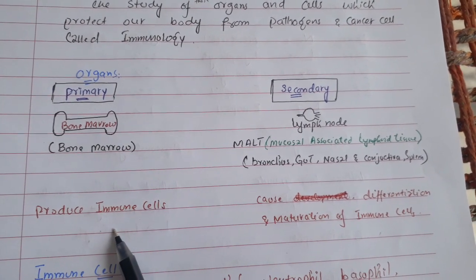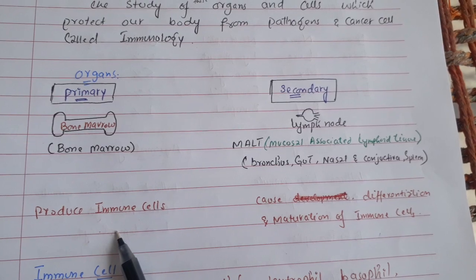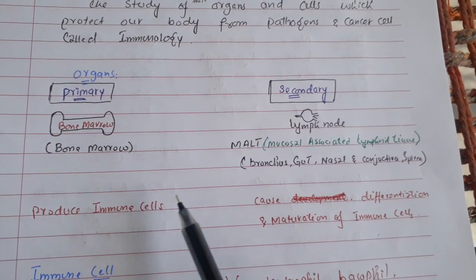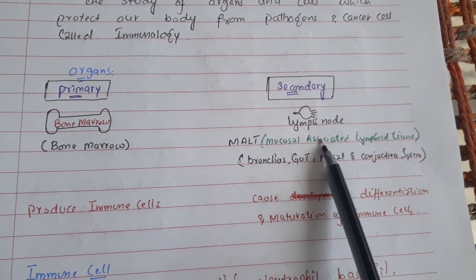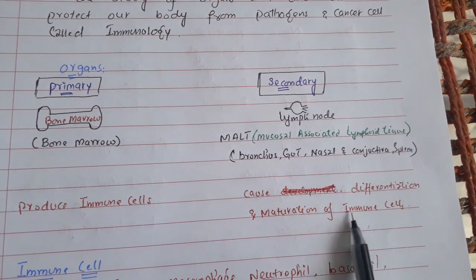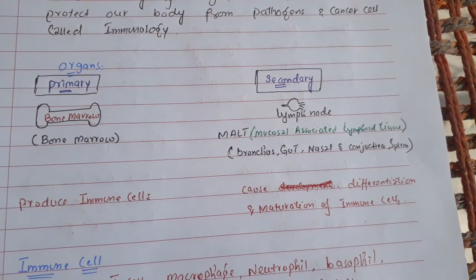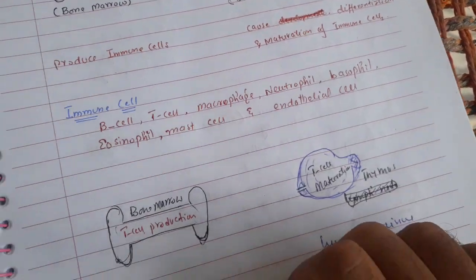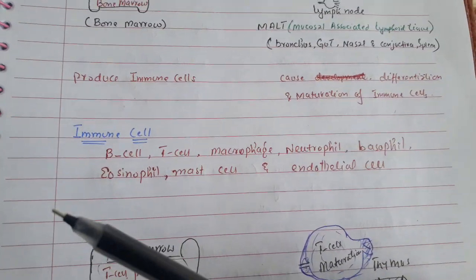The production of immune cells occurs in the primary organ, that is the bone marrow, and the secondary lymphoid organs lead to the differentiation and maturation of immune cells.